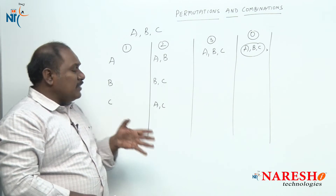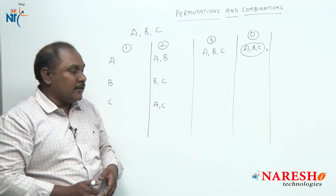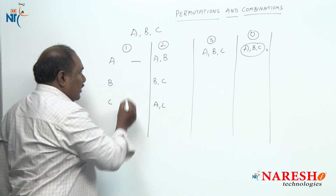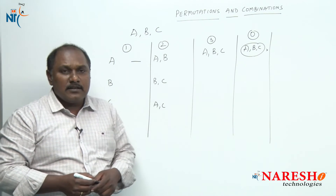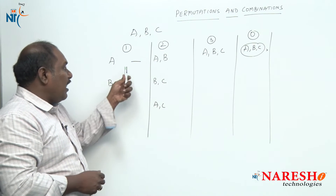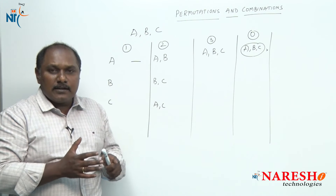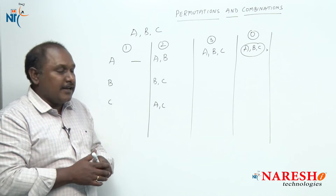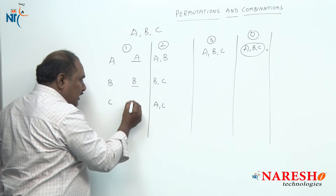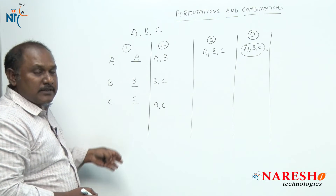Once they buy the tickets, they enter the theater. If they have one ticket, there is only one place available in the theater. In how many different ways can they sit in that chair? If A goes, A will sit; if B goes, B sits; if C goes, C sits. That is three different ways.